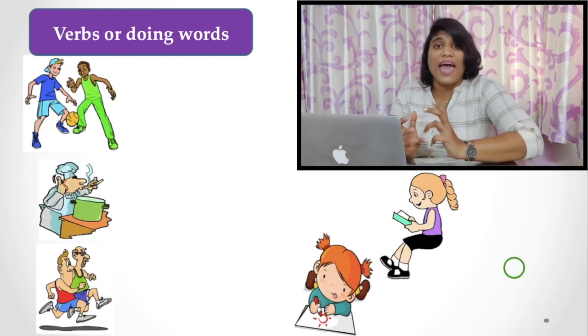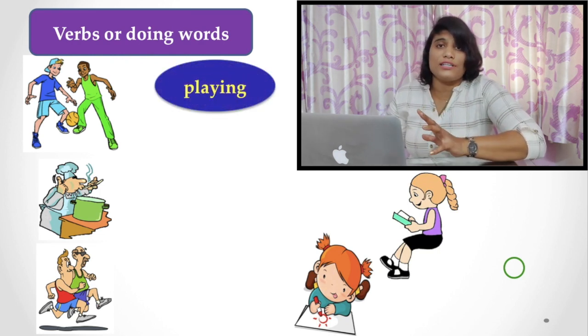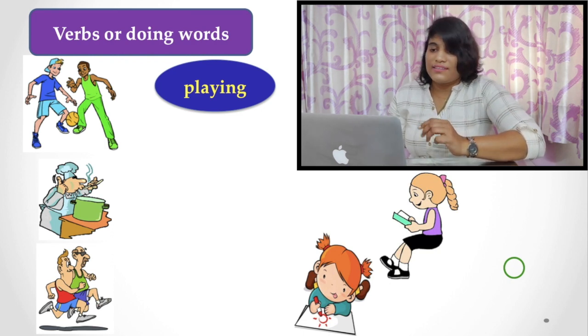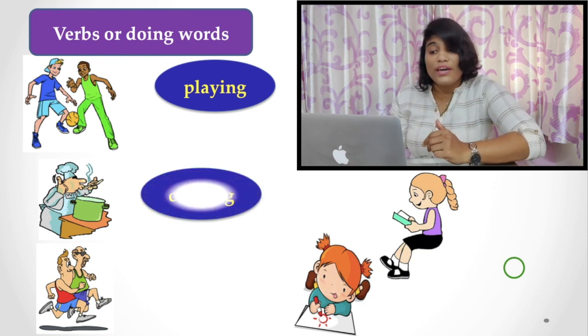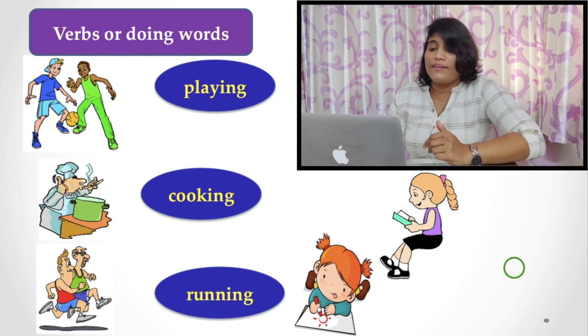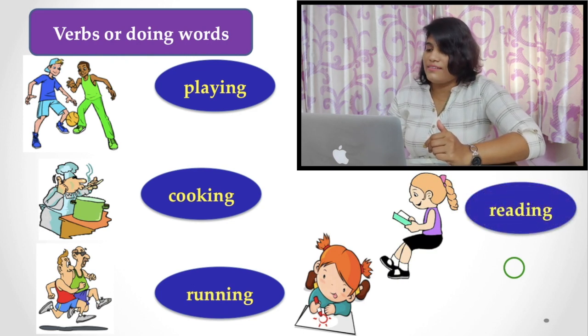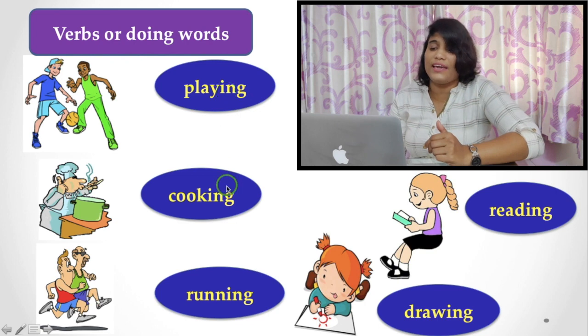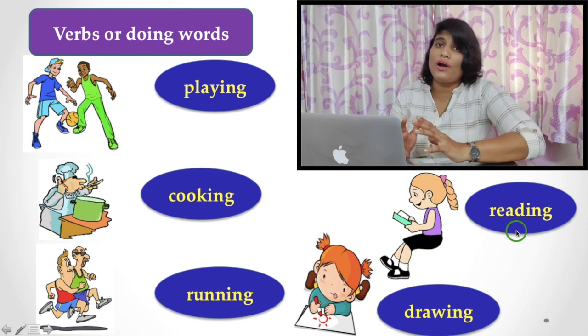Now, verb or action words. See, any type of doing words or action words, they are called verb. For example, playing - that is an action or you do something. Cooking, running, reading, and drawing. Let's see here. Any sort of action - that is playing, cooking, running, drawing, and reading - they are called doing words or verbs.